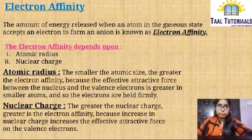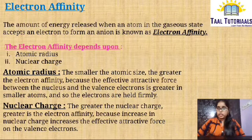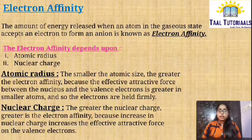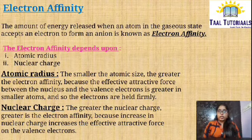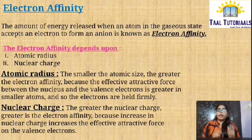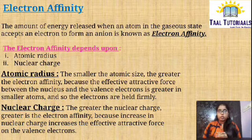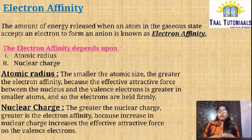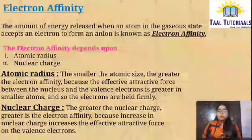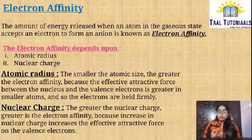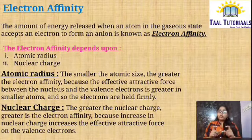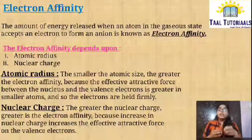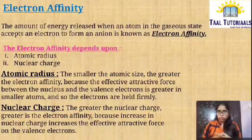Then comes electron affinity. Electron affinity is the amount of energy released when an atom in the gaseous state accepts an electron to form an anion. This is known as electron affinity, and it is an energy-releasing process.